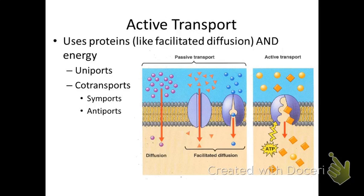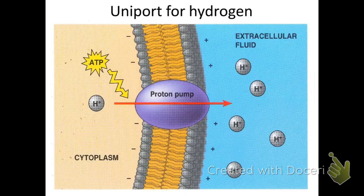Picking up right where we left off, we've talked about passive transport — simple diffusion and the two types of facilitated diffusion through a channel and through a carrier which changes shape. Now we're going to be looking at active transport. Most of active transport deals with transport pumps, which we call uniports or co-transporters. We'll start with the simplest: the proton pump, which is just a very simple uniport.